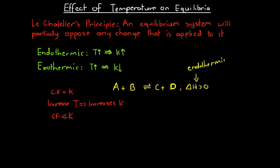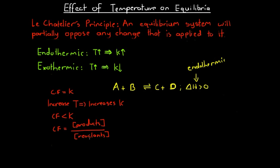If we increase the equilibrium constant, the concentration fraction has now become less than the equilibrium constant — they were previously equal. The concentration fraction equals the concentrations of all our products divided by the concentrations of our reactants. So if we want to increase the concentration fraction to equal K, we need an increase in products and a decrease in reactants. Therefore, if the concentration fraction is less than K, a net forward reaction needs to occur to reach equilibrium.